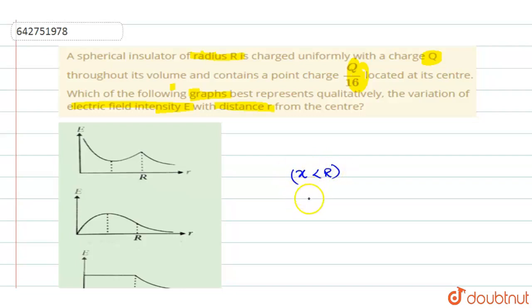then the electric field equation becomes E is equal to 1 by 4 or you can write it as Q into X divided by 4 by 3 pi R cube into 3 epsilon naught plus the next one is Q by 16 charge which is located at the center. So, it will be 4 pi epsilon naught into X squared.